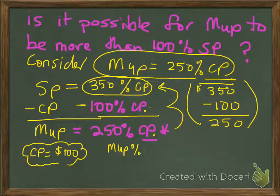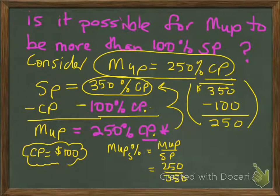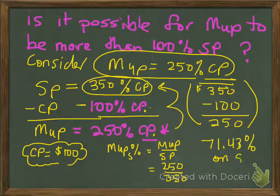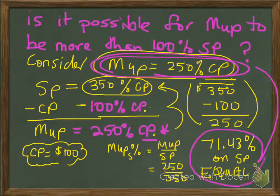My markup percentage based on selling price is the ratio between markup and selling price. That gives me a ratio of 250 to 350, which amounts to 25 out of 35, or 5 out of 7, which in decimal form works out to 71.43%. So a markup of 71.43% on the selling price is equal to a markup of 250% of cost price. These two markups are identical — they'll always give you the same percentages and dollar values when plugged into the relationship.